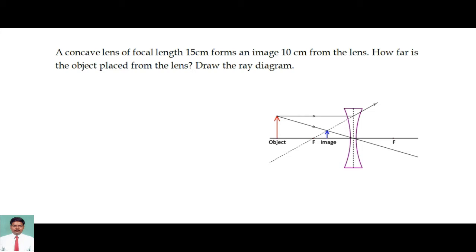And this is the ray diagram for the image formation due to a concave lens. Now here the focal length of the concave lens is given as 15 cm, so the focal length value is 15 cm from the optic center O. And then the image is formed at a distance of 10 cm from the optic center.